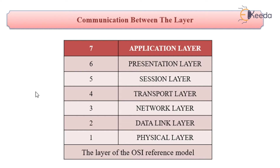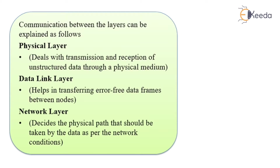Let us see how the communication between these seven layers happens. The physical layer deals with the transmission and reception of unstructured data to a physical medium. The data link layer helps in transferring error-free data frames between the groups. The network layer decides the physical path that should be taken by the data as per the network conditions.